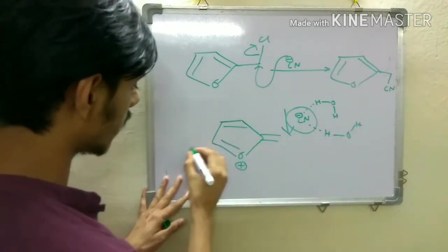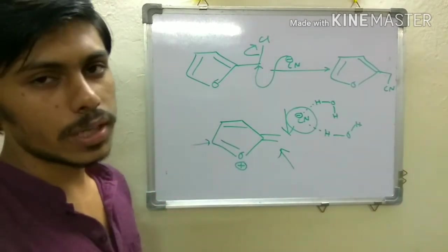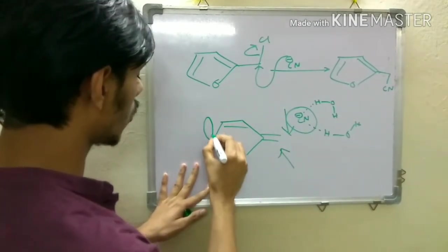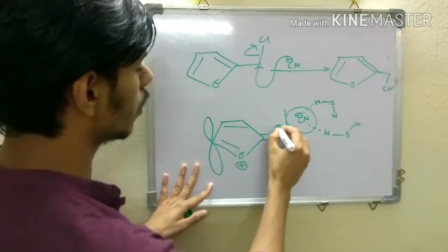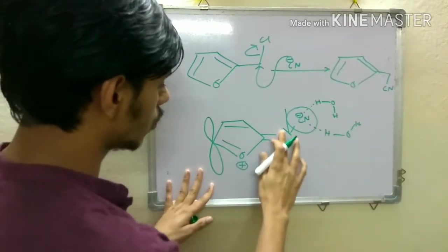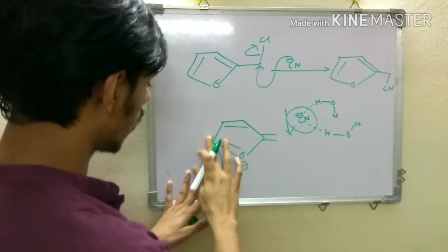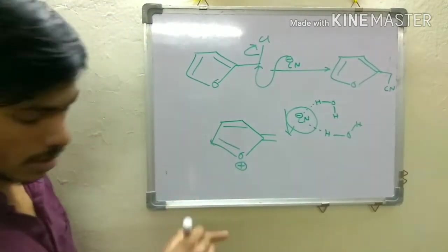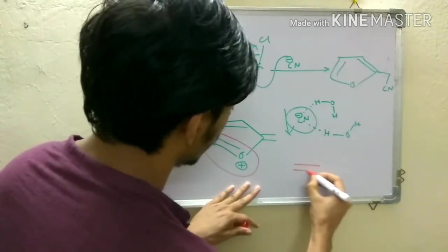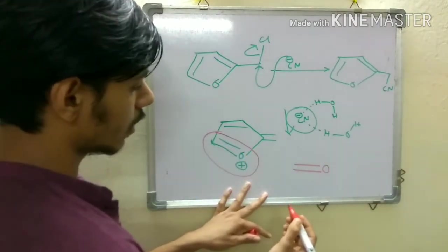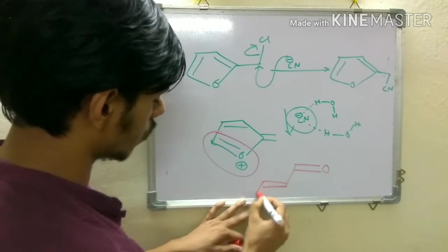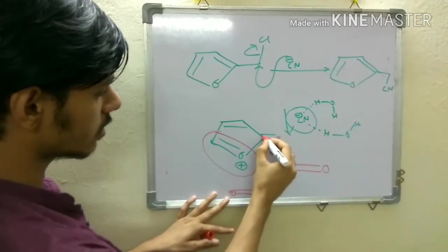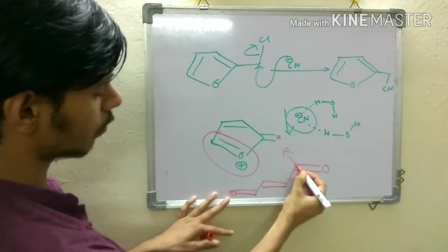One question remains: why does the cyanide attack at this particular center and not the other? In terms of molecular orbital theory, calculation shows the LUMO coefficient is greater at this center and lower at the other. Even without MO theory, you can reason by analogy: this part of the molecule resembles a carbonyl group (C=O), and drawing the full conjugated structure shows this end corresponds to the carbonyl carbon.